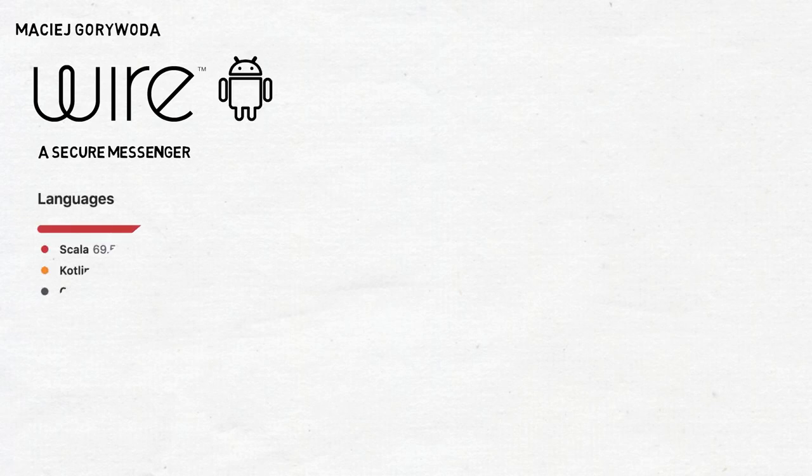Hello, my name is Maciek. I live in Berlin currently, and I work there for Wire, an end-to-end encrypted messenger. I work there in the Android team, even though I write my code in Scala. About two-thirds of Wire's Android code is written in Scala, making it unique among Android apps.